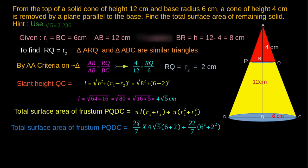On substitution, we get 22 by 7 into 4 root 5 into (6 plus 2) plus 22 by 7 into (6 squared plus 2 squared).